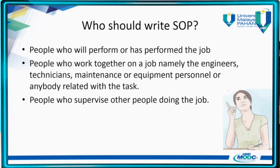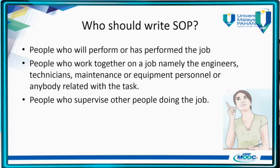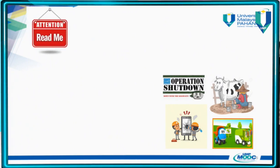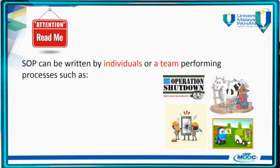Who should write the SOP? The SOP should be written by: number one, the actual person who will perform or who has performed the job; number two, people who work together on the job, such as a group of engineers or technicians working together to complete a project; number three, supervisors; number four, safety and health officers; and last but not least, technical writers. In other words, the SOP can be written by individuals or a team of individuals who actually perform the job together.